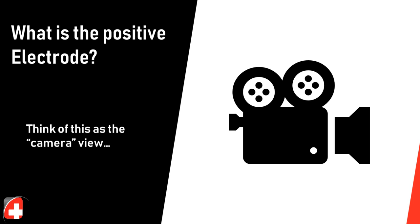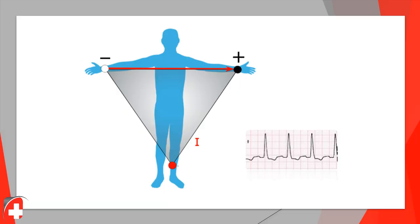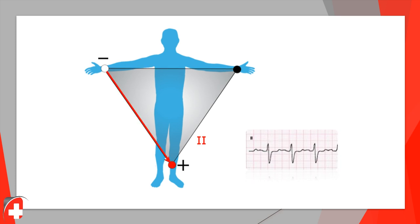We have to look at the positive electrode and think of it as a camera. It's the camera in that view. Here again is Eindhoven's Triangle, and in the typical lead 1, the camera is located on the left arm view, pointed towards the left, looking from left arm to right arm. When energy moves towards that camera in lead 1, you see a positive deflection on the EKG paper.